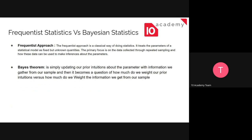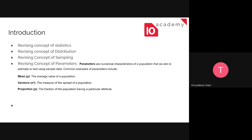Before getting into Bayesian statistics and why we use Bayesian theory, let's cover some foundational concepts. We are familiar with statistics, distributions, and sampling. In statistics, those are common terms — distributions, samplings, and parameters. For example, if we're measuring the height of people in some area, there is a large variety of values, both large and small — that is the distribution of the data.